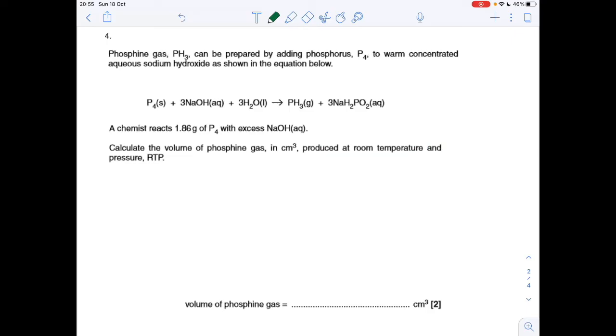Next question is a reactant volume question at RTP, so it's not ideal gas if it says room temperature and pressure. We've got 1.86 grams of P4, and we've got to work out how many cm cubed of phosphine gas. That's a 1 to 1 ratio. So the first thing we'll do is work out the moles of P4.